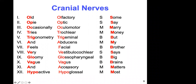Cranial nerve eleven — the spinal accessory nerve — controls the sternocleidomastoid and the trapezius muscle. Cranial nerve twelve — the hypoglossal — hypo meaning under, glossal meaning tongue — it moves the tongue in a variety of directions.